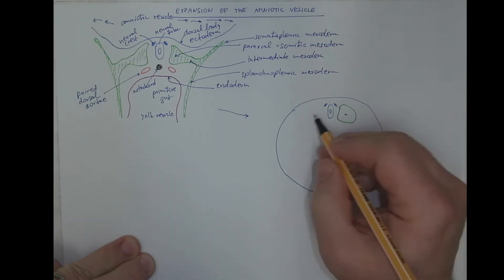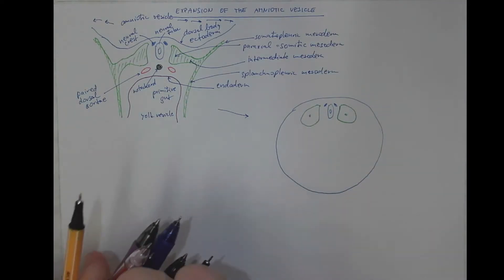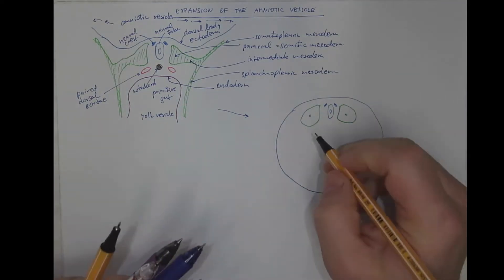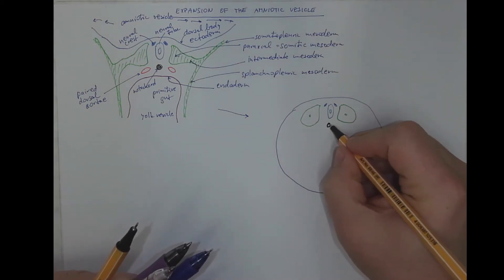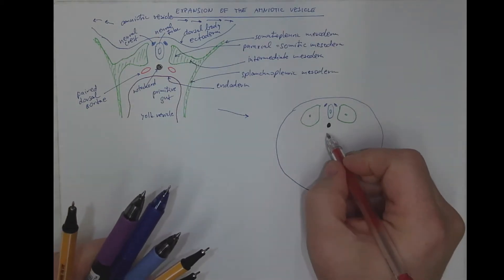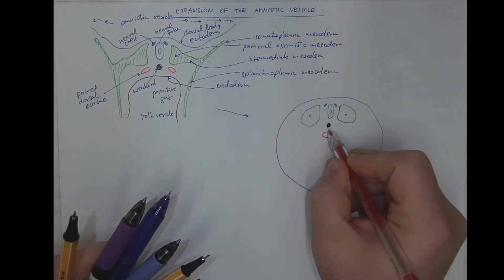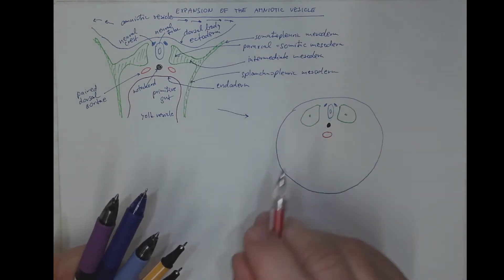The mesoderm splits into three populations: the paraxial somatic mesoderm. The somites have a small cavity inside. The notochord stays here, below the neural tube. Ventrally we got, ventral to the notochord, we got the dorsal aorta.